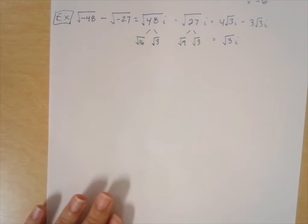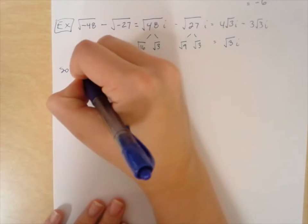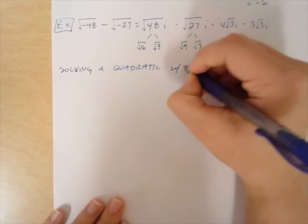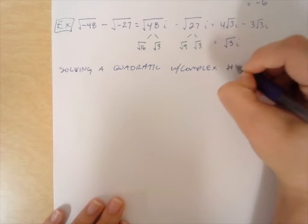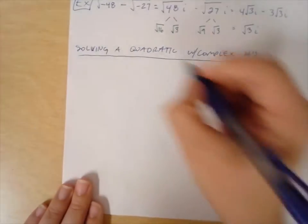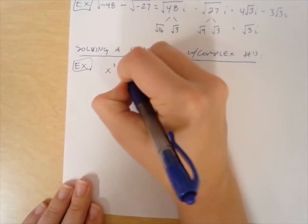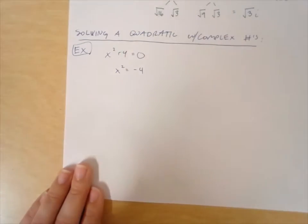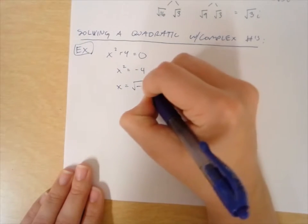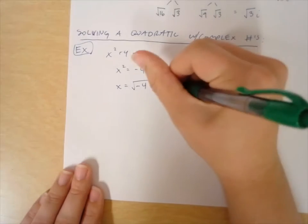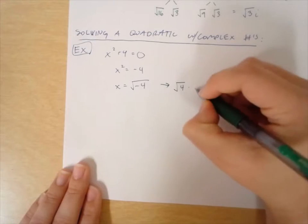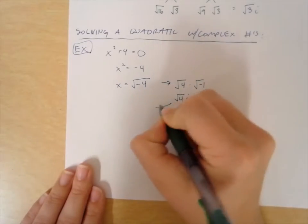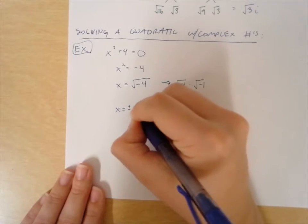The last topic today is solving a quadratic with complex numbers. If I had the quadratic x squared plus 4 and wanted to find its zeros, I would set it equal to zero, subtract 4 from both sides, and take the square root. I can break up the square root of negative 4 as the square root of 4 times the square root of negative 1, which is the square root of 4 times i, and the square root of 4 is 2. So x is plus or minus 2i.